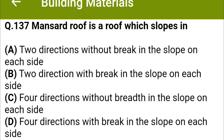Mansard roof is the roof which slopes in: option A two directions without break in the slope on each side, option B two directions with break in the slope on each side, option C four directions without break in the slope on each side, option D four directions with break in the slope on each side. The correct answer is option D, four directions with break in the slope on each side.